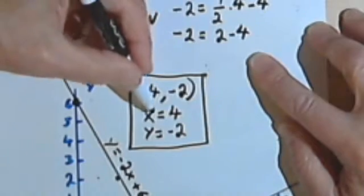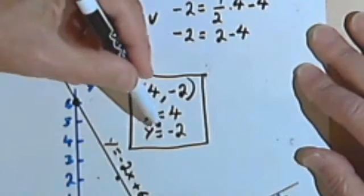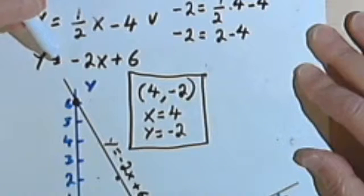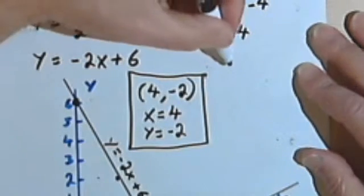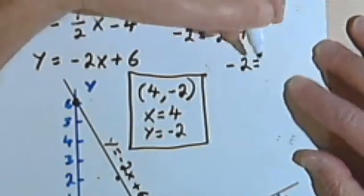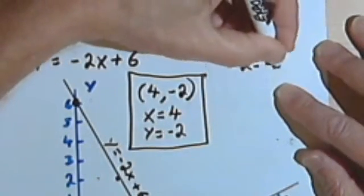Using those same values, x equals 4 and y equals negative 2, in my second equation, let's make sure that one checks. So y is negative 2.